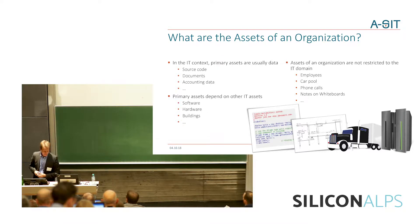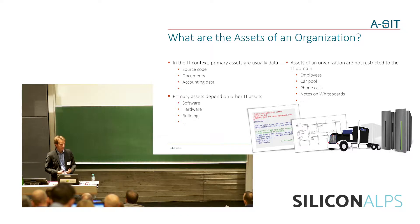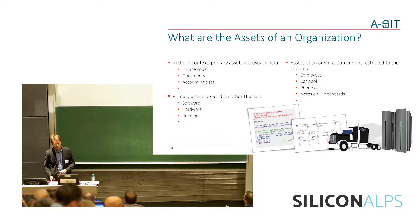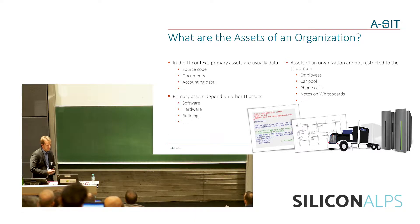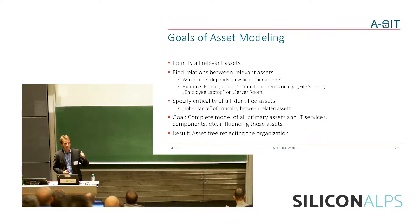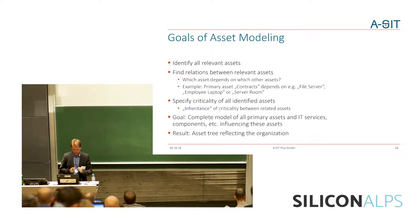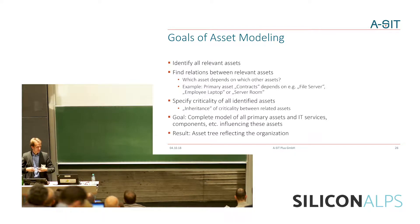When we talk about IT security, our primary assets are usually data — source code, documents, accounting data, whatever might be important for an organization. These primary assets depend on other IT assets like software, hardware, and also the building in which the hardware is operated — the physical security of the building can be relevant. We have quite complex relations between different levels of assets. Of course, assets are not restricted to the IT domain. Employees are also an asset, as can be carpools, phone calls, notes, and whiteboards. The term asset is quite broad.